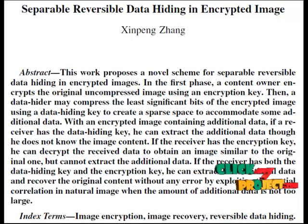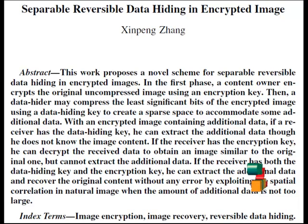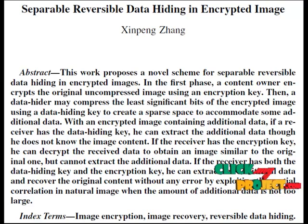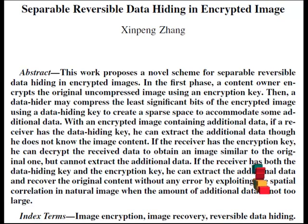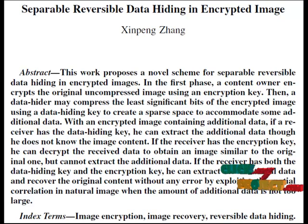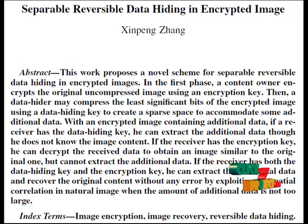In the data hiding process, the data hider may compress the least significant bits of the encrypted images using a data hiding key to create a space to accommodate some additional data. Then these added data are transmitted to the receiver side.